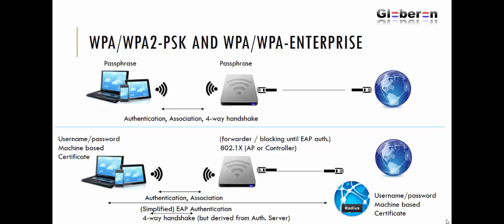In the Enterprise scenario, we have clients on the left side, an access point, and on the right side a RADIUS server — an authentication server where all the usernames, passwords, machine-based identifications, and certificates reside. This is used for larger networks like enterprises or public Wi-Fi, because you cannot store thousands or millions of usernames on a single access point — there is just not enough CPU and memory. So you store it on that external authentication server, which is essentially a large database.